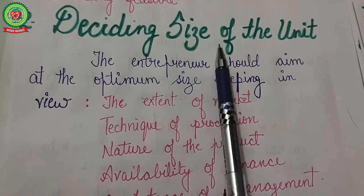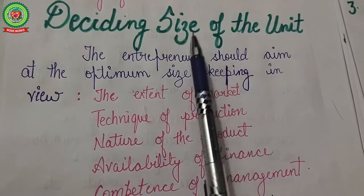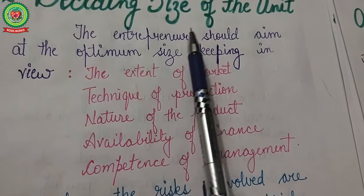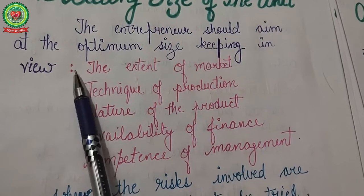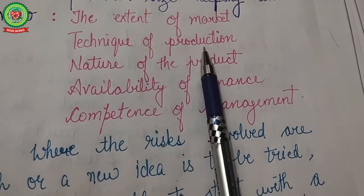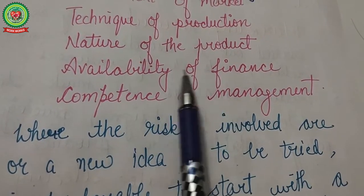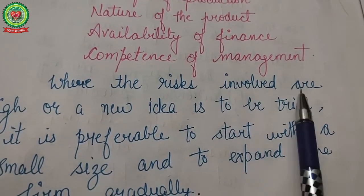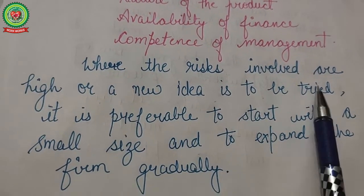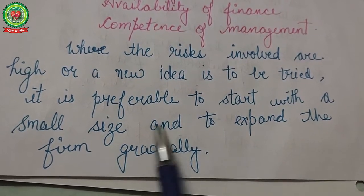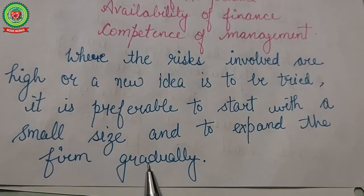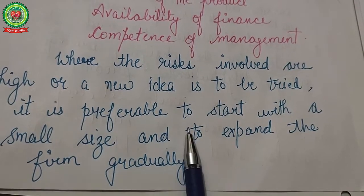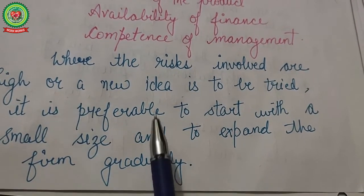The next step is deciding the size of the unit. Determination of the size of the firm or scale of operations is an important decision. The entrepreneur should aim at the optimum size keeping in view the extent of the market, technique of production, nature of the product, availability of finance, and competence of management. Where risks involved are high or a new idea is to be tried, it is preferable to start with a small size and expand gradually. A careful analysis of technical, managerial, financial, and market factors should be made to determine firm size.